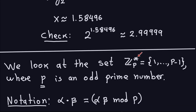I'm going to introduce an operation on Z_p*: multiplication modulo p. If alpha and beta are elements of Z_p*, then alpha times beta means multiply the numbers and take the remainder modulo p. Believe me, this is part of the discrete logarithm problem — I need to go over it so you understand. I probably won't be able to fully define the discrete logarithm problem in this video; that will come in the next one.